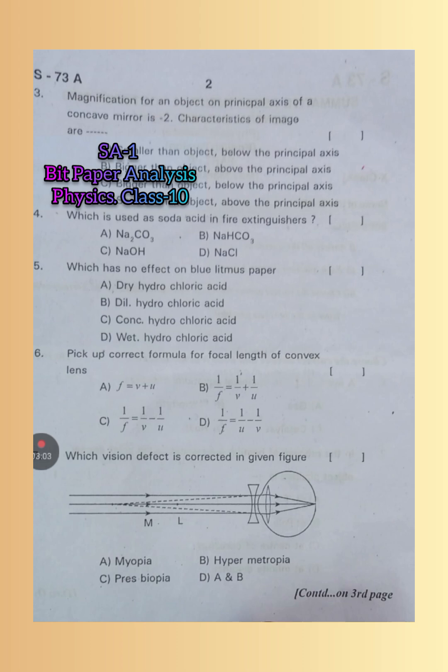Next one: Pick up correct formula for focal length of a convex lens. The focal length of a convex lens is given by 1/f = 1/v - 1/u. So C is the right answer.